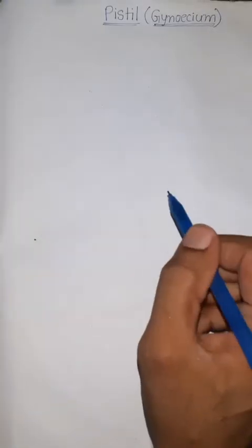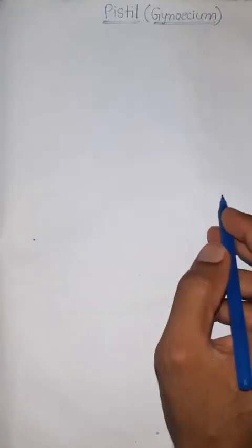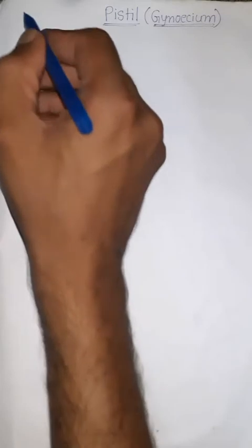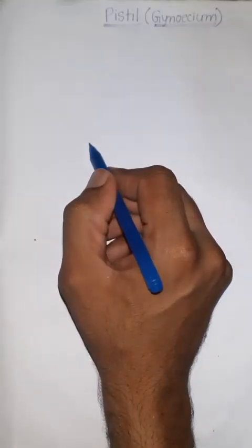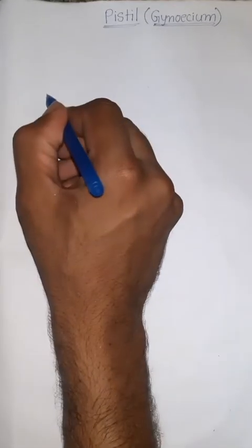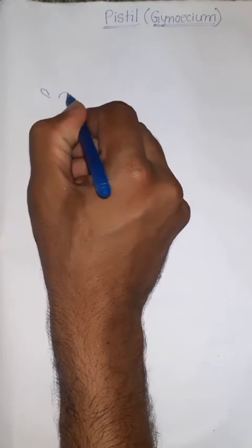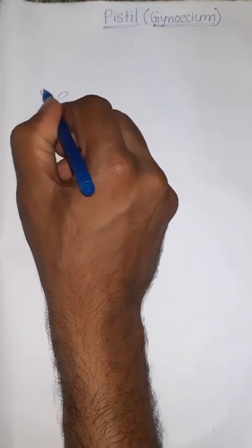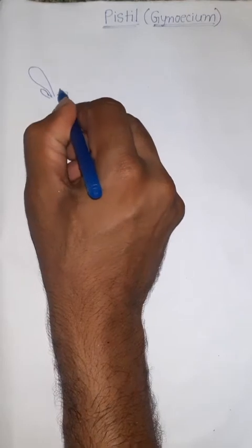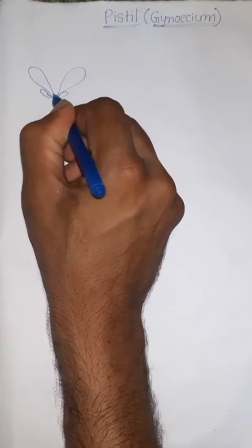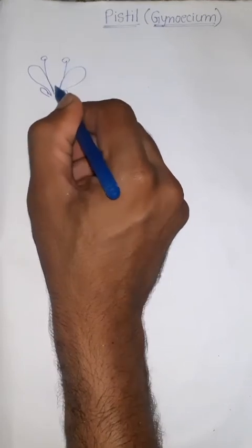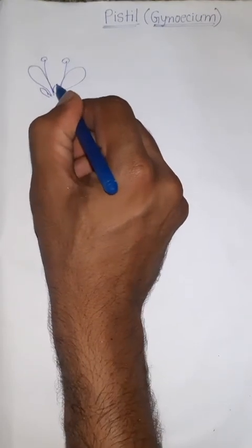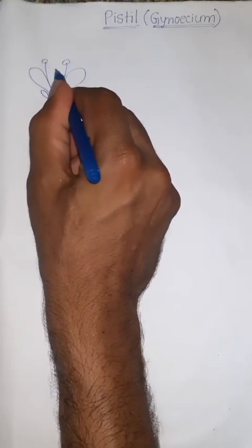First of all, where is it located and what is its function? In the first video, we have seen a typical angiospermic flower with 4 whorls. The first whorl is Calyx, the second is Corolla, the third is Androecium, and the fourth whorl is Gynoecium or Pistil.